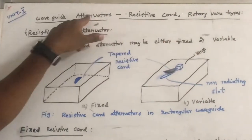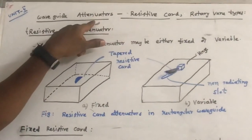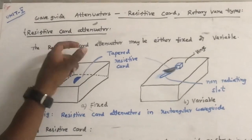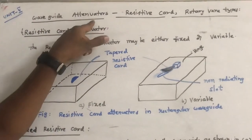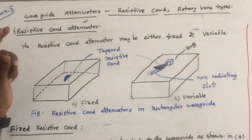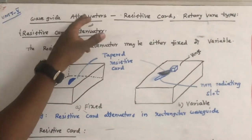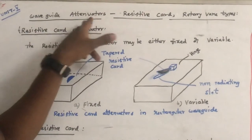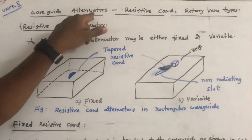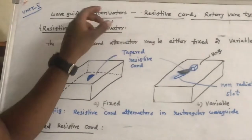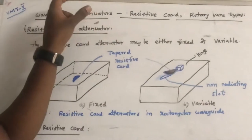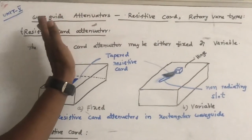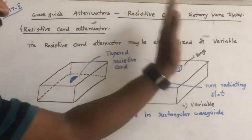First, let us see what is an attenuator. An attenuator is a device which absorbs a certain portion of the power when the wave is passing through it.